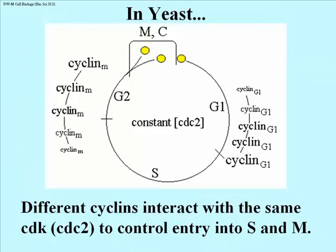The active cyclin G1-CDC2 kinase allows the cell to enter S phase to replicate their DNA. Imagine a cell that finds itself in a nutrient-poor environment and somehow it senses that it hasn't reached the right size yet. That cell will not pass from G1 to S, another checkpoint. Likewise, if insufficient cyclin M is made, the cyclin M-CDC2, the MPF of yeast, will not reach its threshold level and the cell will not enter mitosis.